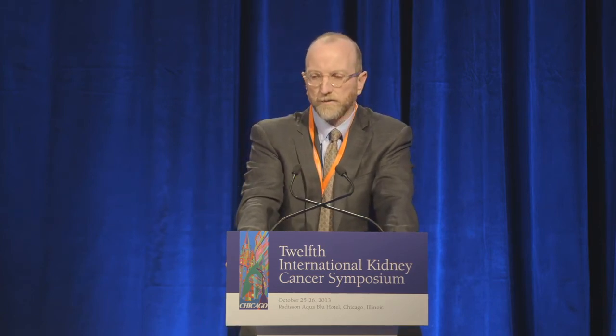Looking at outcomes in clear cell renal cell carcinoma, the drop off is significant for tumors with necrosis versus those without. This outcome difference is also important in chromophobe renal cell carcinoma with a similar drop off in survival. It is also important in papillary, but not to the same degree as in clear cell and chromophobe.